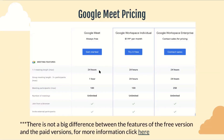There's not a huge difference between the features of the free version and paid versions of Google Meet. The free version is always free, with a 24-hour maximum meeting length and 100 maximum participants with unlimited meetings. The Google Workspace Individual plan increases the group meeting length for participants. And Google Workspace Enterprise increases the maximum meeting participants up to 250.